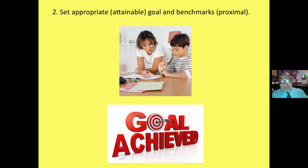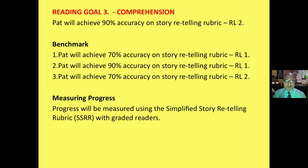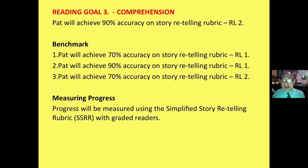Step two: set appropriate and attainable goals and benchmarks that can be reached and are proximal. Here's an example of reading goals for comprehension, found in an IEP or simply an intervention plan. PAT will achieve 90% accuracy on story retelling rubrics at reading level two — very simple, very focused. The benchmarks are the baby steps to get there: 70% at reading level one, 90% at reading level one, 70% at reading level two.